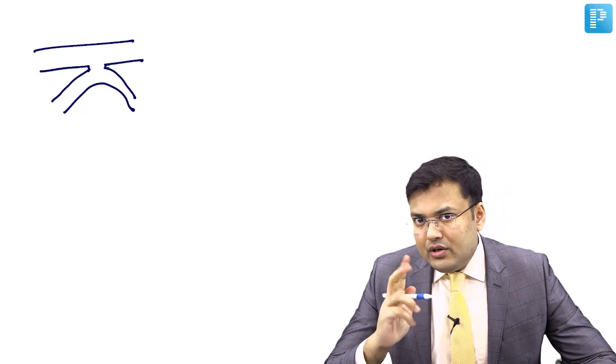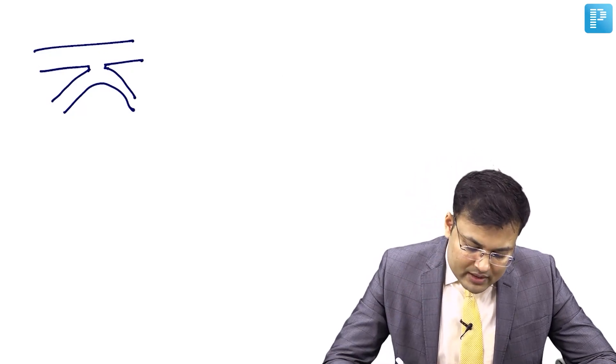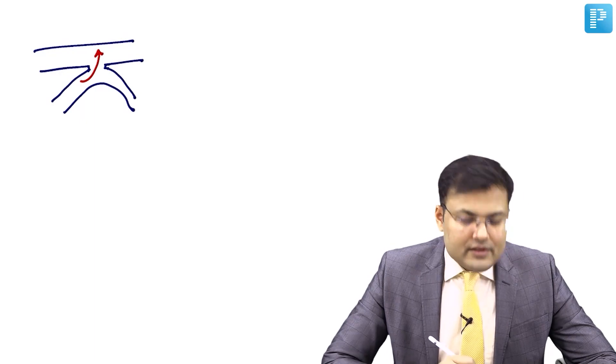Another problem in Crohn's disease is that ulceration leads to perforation. When there are two parts of bowel and there is ulceration and perforation, a fistula forms in between them. This is an internal fistula. If both parts are small intestine, this is an enteroenteric fistula.